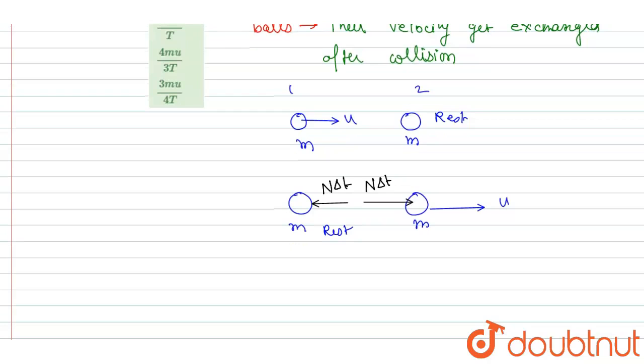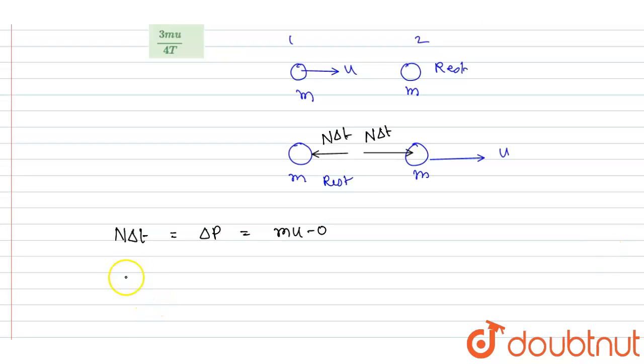So if we talk about the impulse, it will be equal to change in momentum. So I will write the impulse. Let's say I'm writing on any of the ball. If you write, you will get the same impulse because the magnitude is same but in opposite direction. So it will be final momentum minus initial momentum, that is change in momentum. So final momentum is mu, initially this was at rest, so integral F dt will be equal to this.